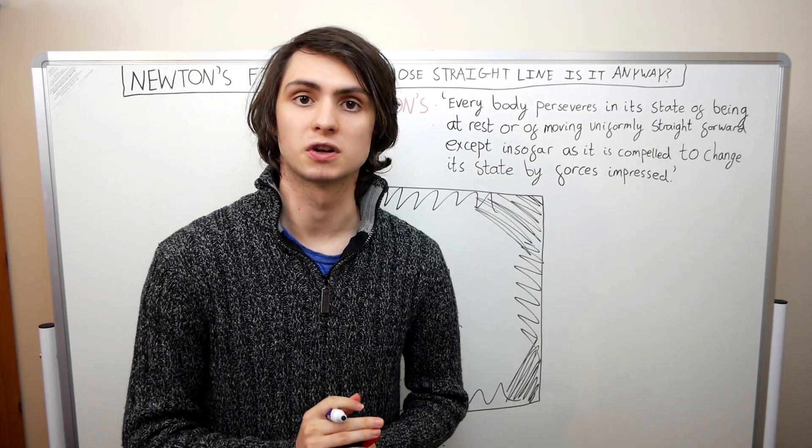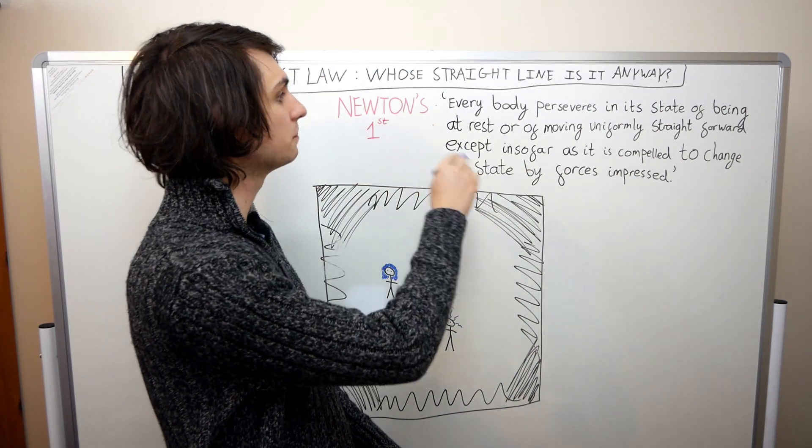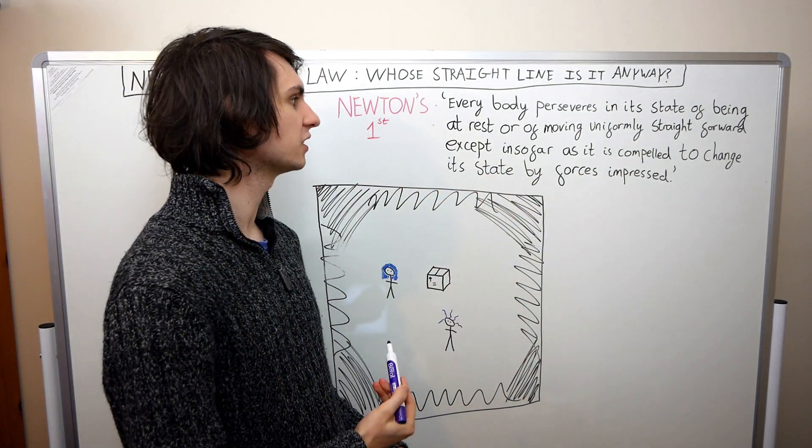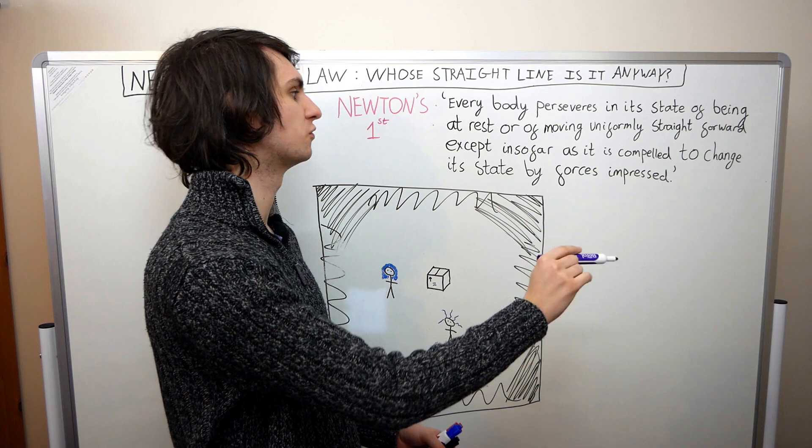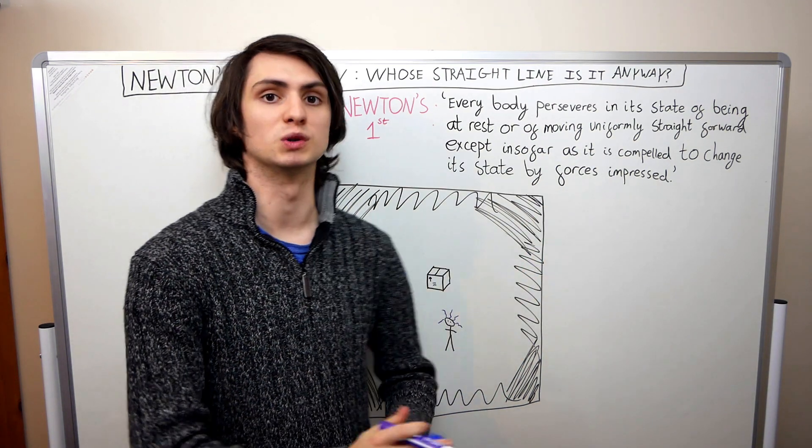So what is Newton's first law? In his own words, Newton's first law of motion is this: Every body perseveres in its state of being at rest or of moving uniformly straightforward except insofar as it is compelled to change its state by forces impressed.